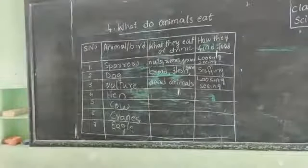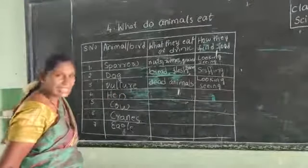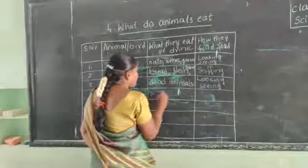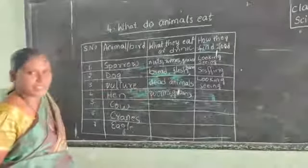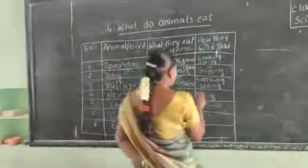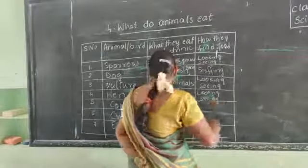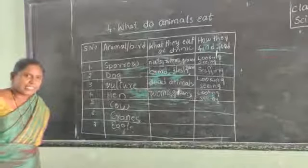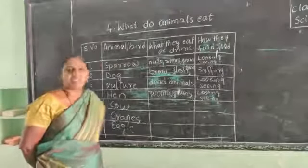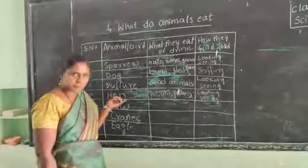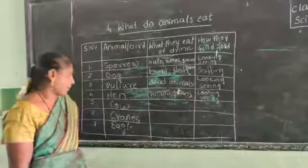Next one is the hen. Hen eats worms and grains. How does it find its food? By looking and seeing. Hens are almost always found in our surroundings.